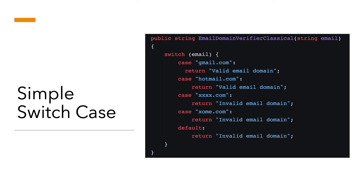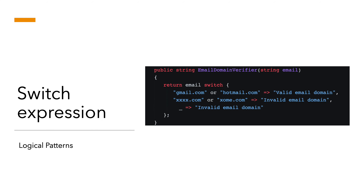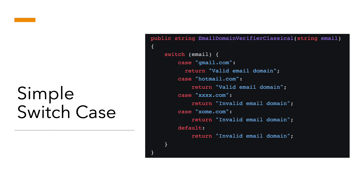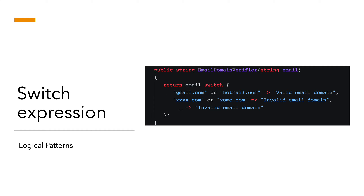This is a simple classical switch case statement you might have seen. In this method we're trying to verify an email domain — if it has a gmail.com domain name it's a valid email domain, if it's hotmail it's also valid, and if it's something else it returns invalid email domain. You can write this with if-else as well, but switch case makes it easier to compare against the switch expression.